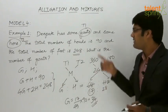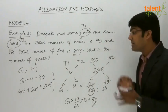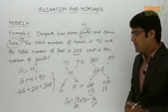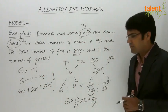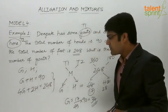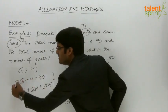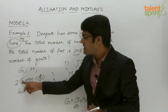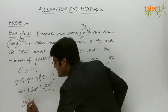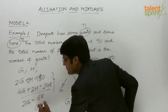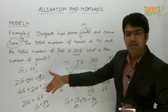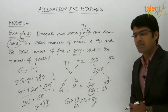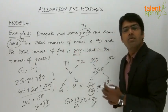The remaining 90 minus 34 equals 56 are hens. We can verify using the two equations: multiplying g plus h equals 90 by 2 gives 2g plus 2h equals 180. Subtracting from 4g plus 2h equals 248, we get 2g equals 68, so g equals 34 — the same answer. The idea is to understand that such questions can also be solved using the allegation rule.